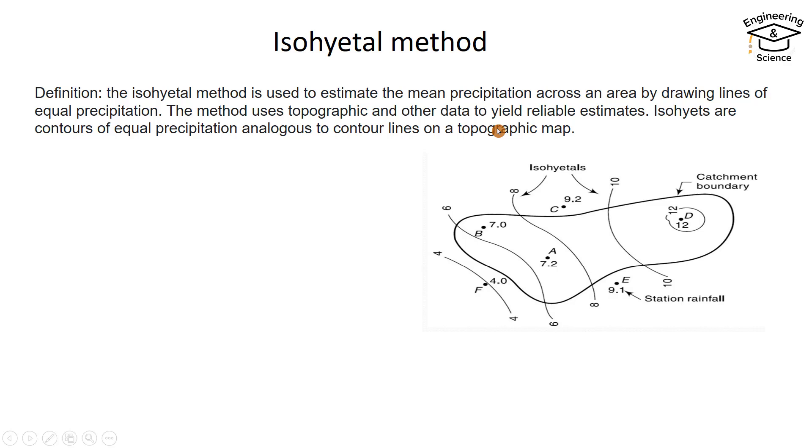Let us define first: the isohyetal method is used to estimate the mean precipitation across an area by drawing lines of equal precipitation. The method uses topographic and other data to yield reliable estimates.